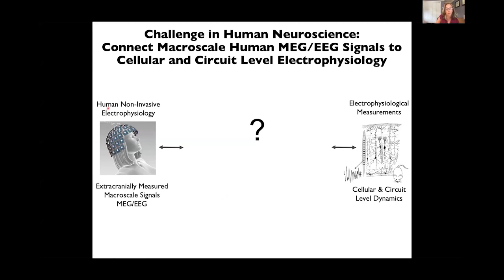We all know that MEG and EEG are incredibly powerful techniques to study human brain dynamics, but it's still very difficult to infer what's going on at the underlying cellular and circuit level, and to connect to the very rich data sets that we can now get in animal models. It's critical to connect to this circuit level detail if we want to understand why these human signals correlate with function or to target treatments when they're disrupted. Our software is designed to bridge these scales — it's a neural modeling software developed to do exactly that.